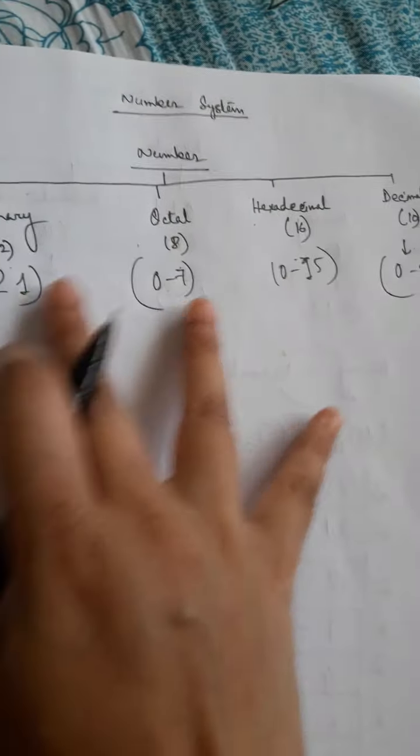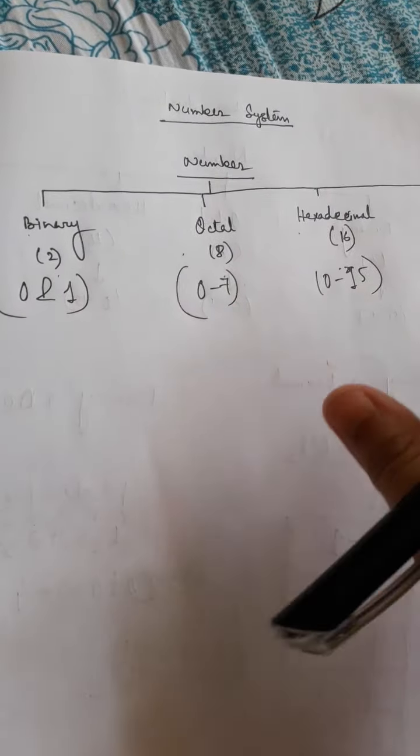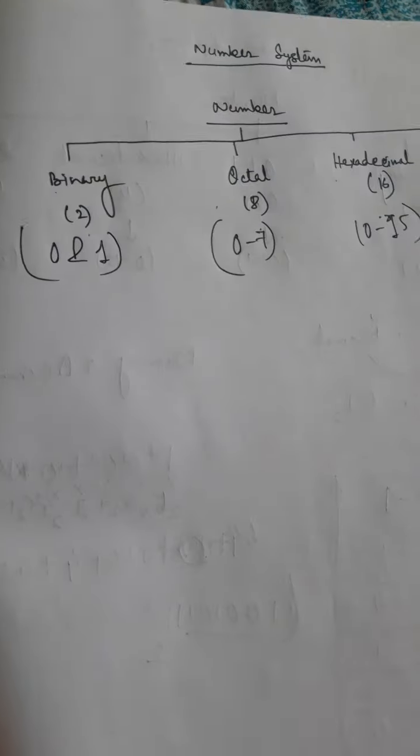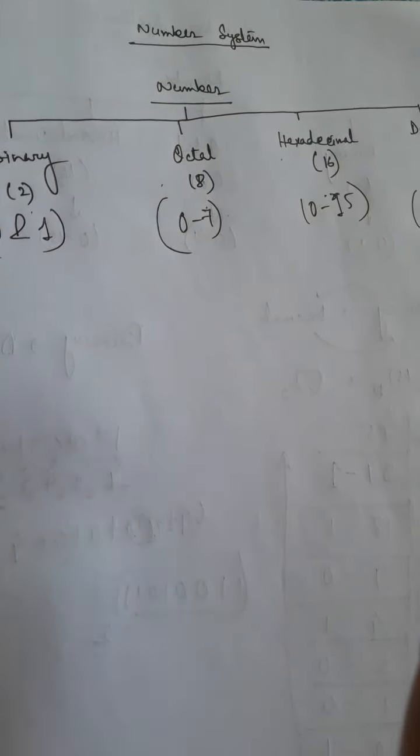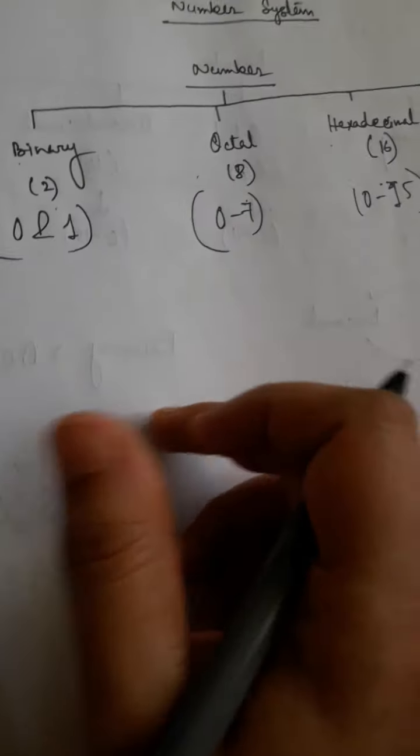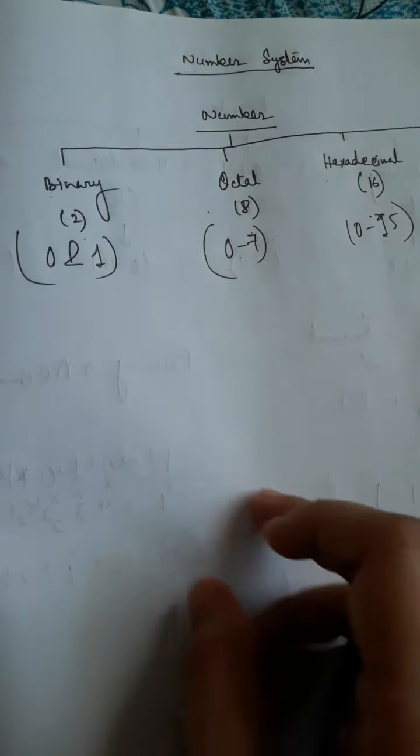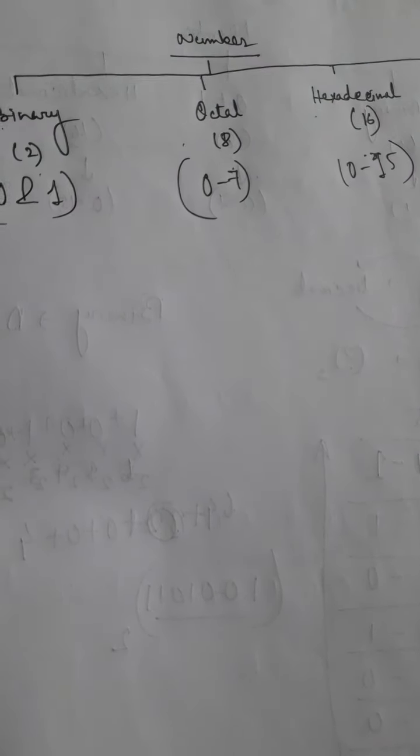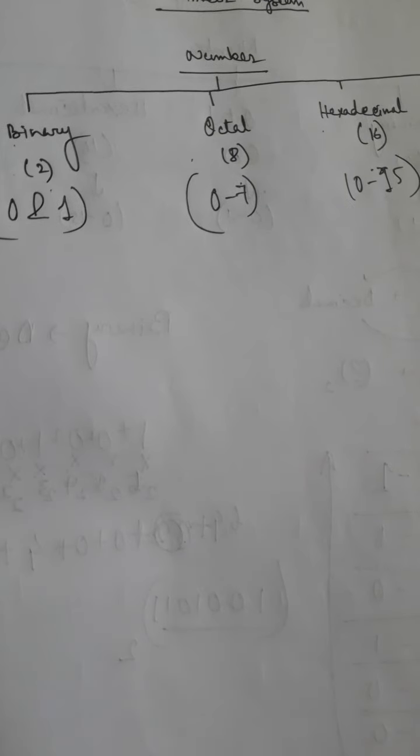These are the range of numbers of each number system. Now you have to convert each number system to another number: binary to decimal, decimal to binary, octal to decimal, decimal to octal, hexadecimal to decimal and decimal to hexadecimal. Whenever you get any number, first you have to identify which number system it is based on the base value.